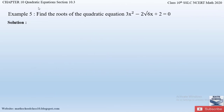Example number 5 from chapter 10, quadratic equations: find the roots of the quadratic equation 3x² - 2√6 x + 2 = 0. We are going to apply the same method as example 3 and 4 — finding roots by factorization or splitting the middle term. The quadratic equation given is 3x² - 2√6 x + 2 = 0.